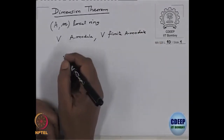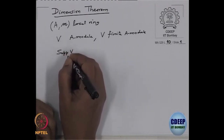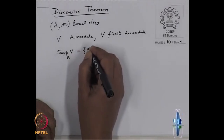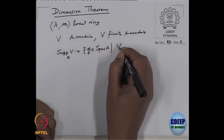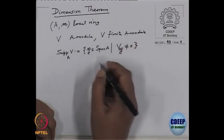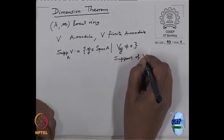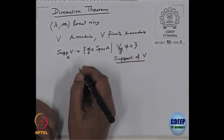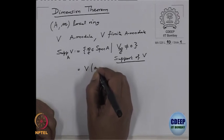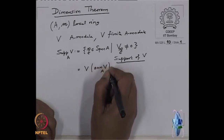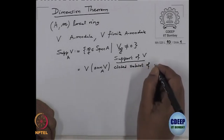For the module we have the support. The support of V as an A-module is by definition all those prime ideals P such that V localized at P is non-zero. This is called the support of the module V, and you would have seen in an earlier course that this is a closed set — it is V of the annihilator of V — a closed subset of Spec(A).